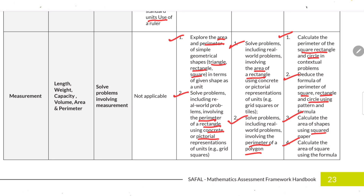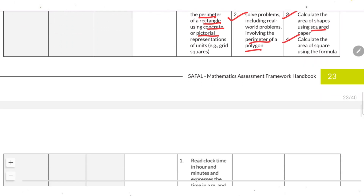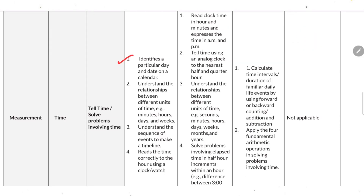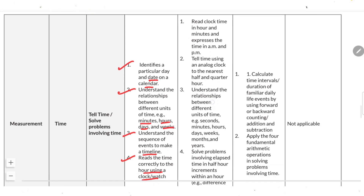For time topics: identify a particular day and date on a calendar. Understand the relationship between different units of time — minutes, hours, days and weeks. Understand the sequence of events to make a timeline. Read the time correctly to the hour using a clock and watch.